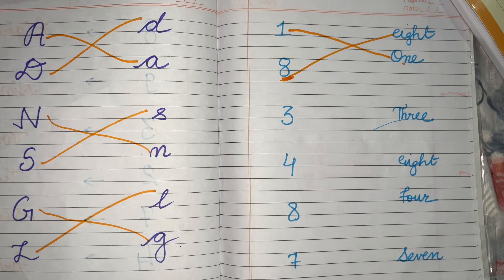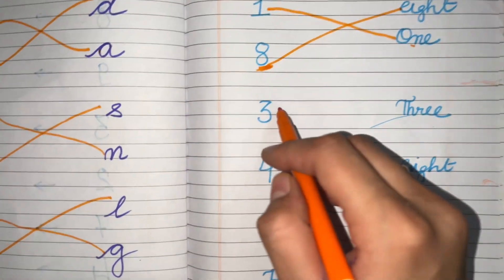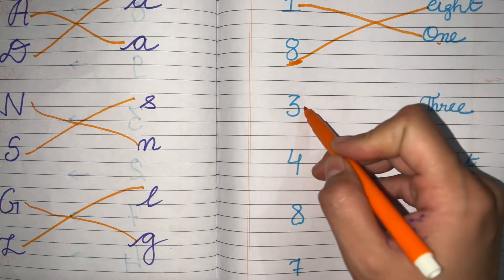The next one is number 3. So what's the spelling of 3? T-H-R-E-E-3. So we'll match it with the 3.